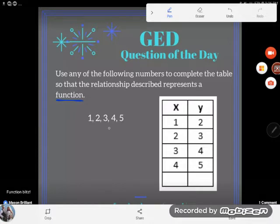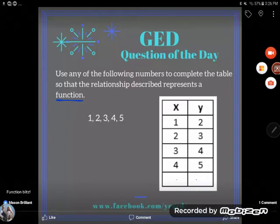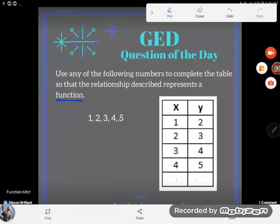Use any of the following numbers to complete the table. We're completing this table over here - you can notice it has some blanks - but we're not just filling it in. We want to do something so that the relationship described represents a function.